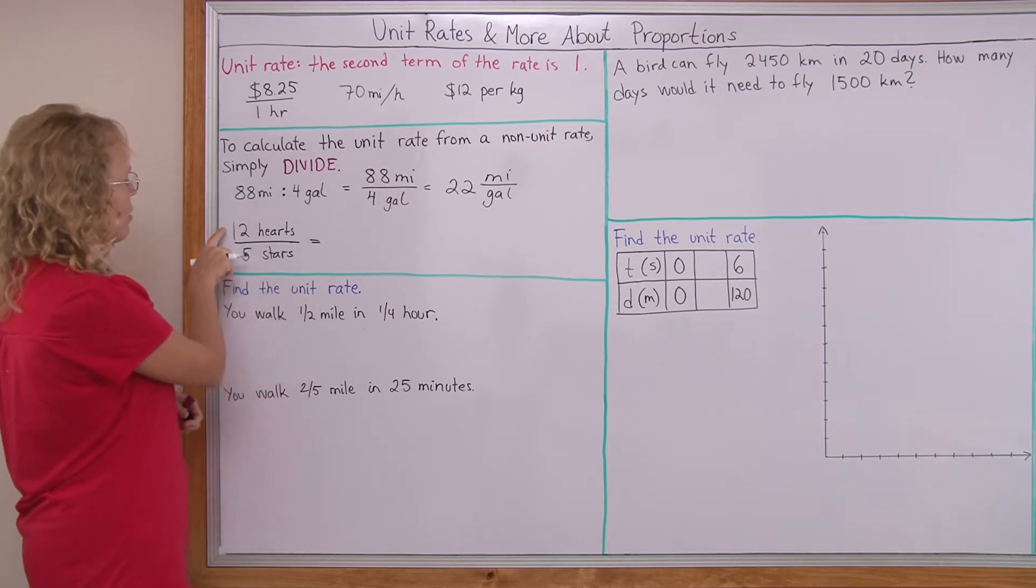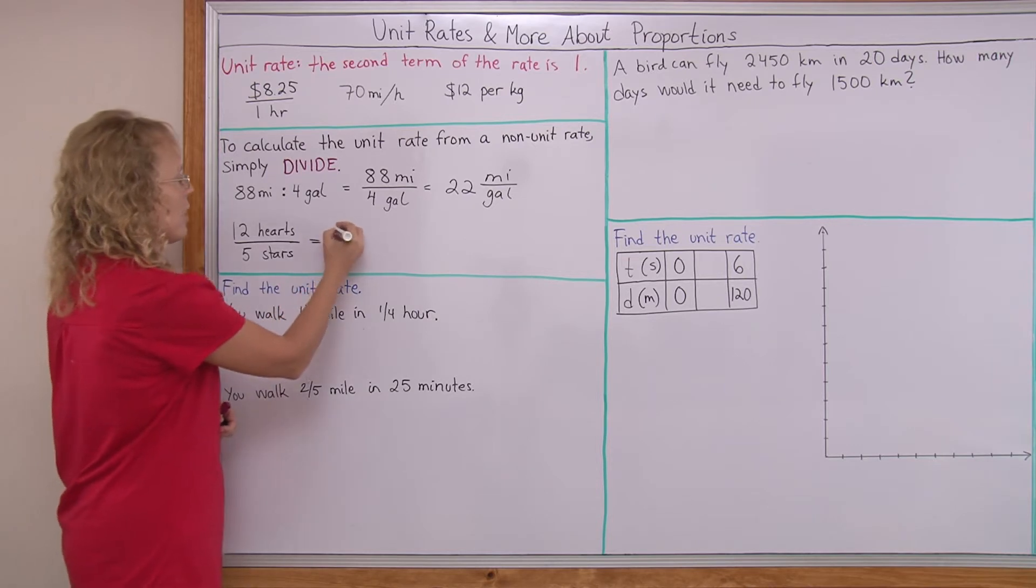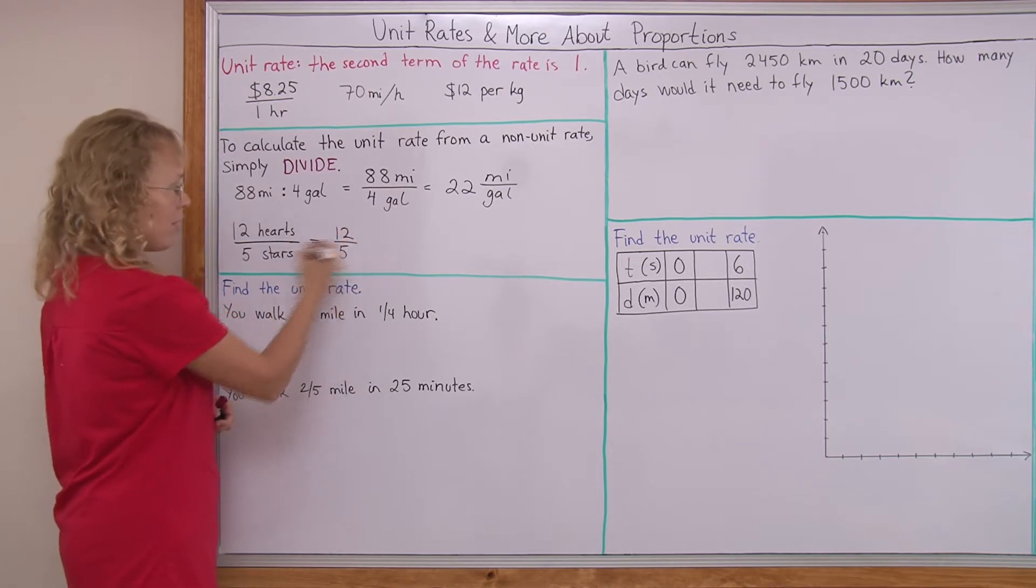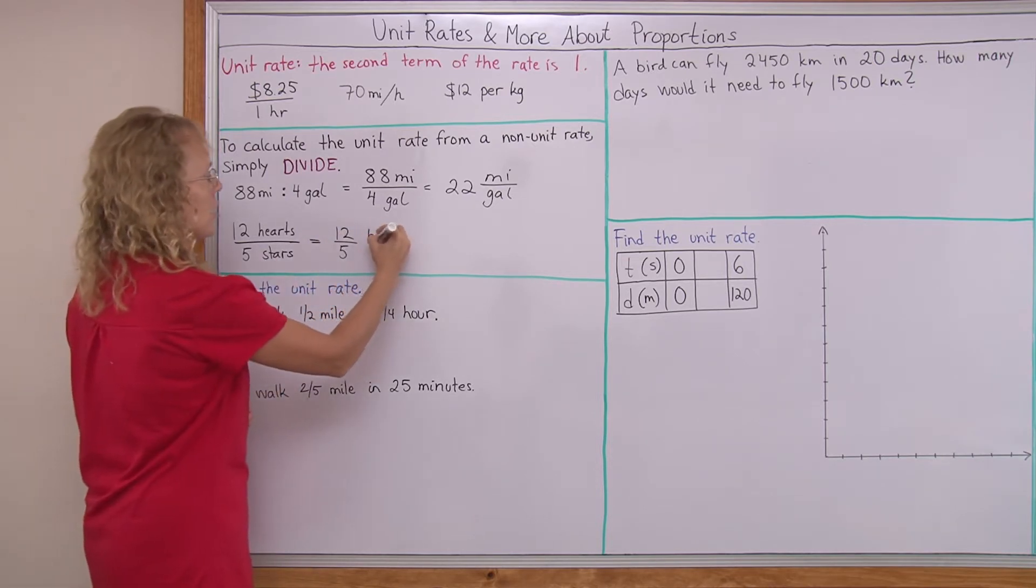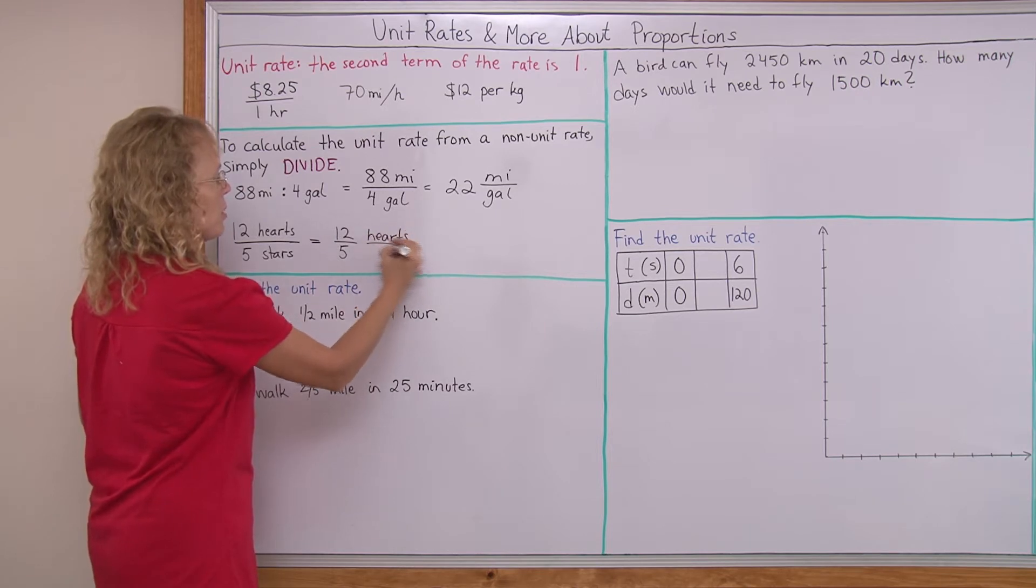If I do that, then I divide 12 divided by 5. So I get 12 fifths hearts per star.